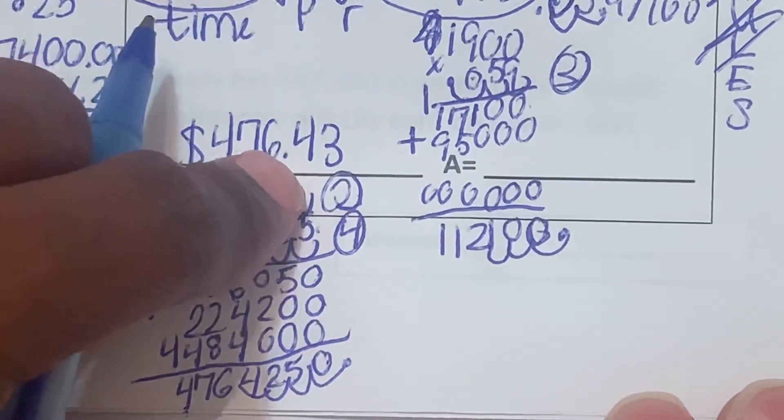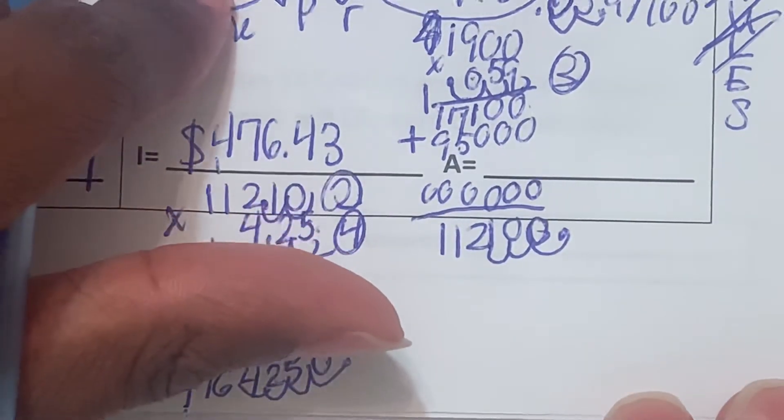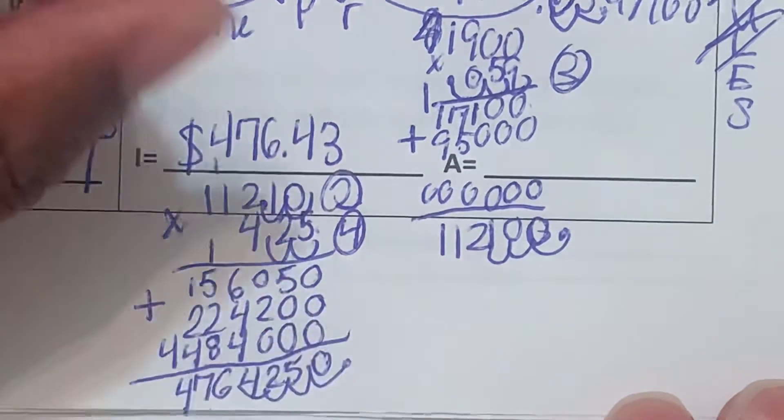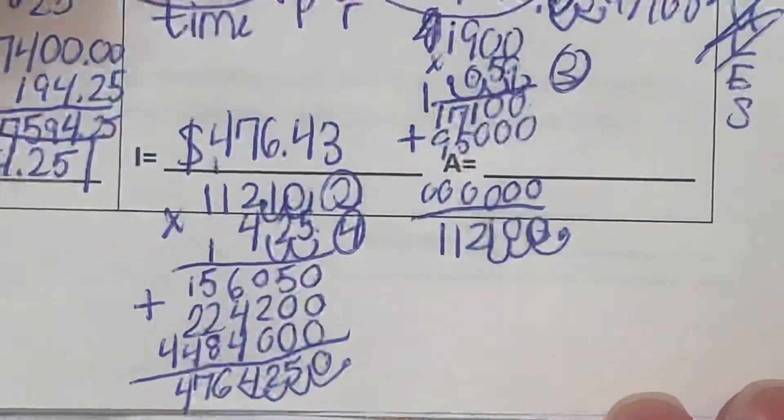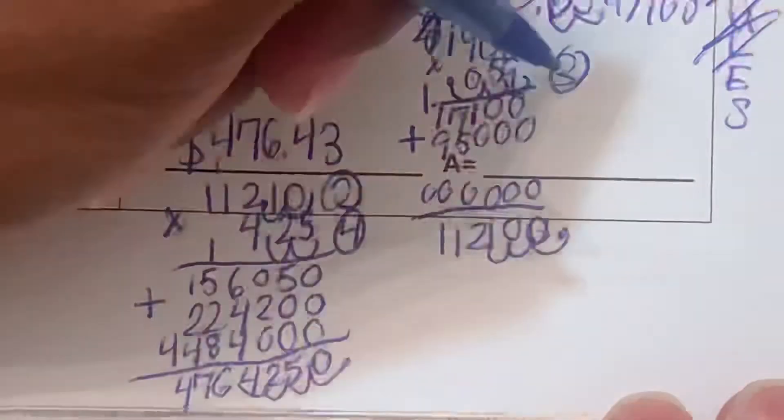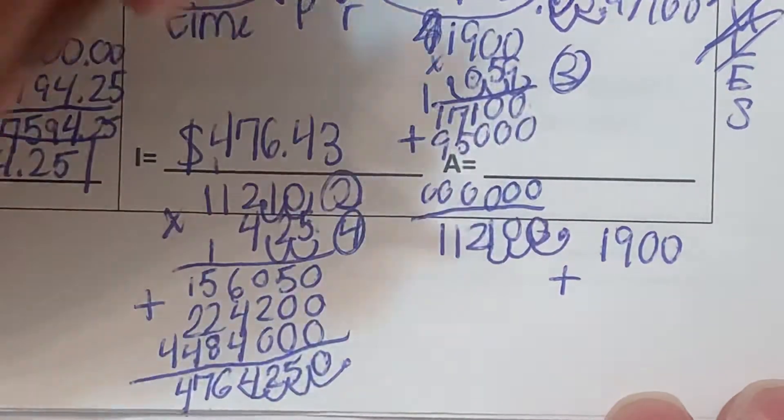Now the total interest or the total amount is going to be $476 and 43 cents plus the 1,900 principal that we had. So let's find that right here, off to the side. We'll do 1,900 plus $476 and 43 cents. So let's add these up.